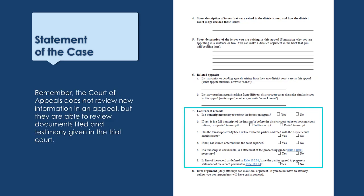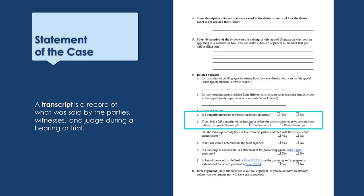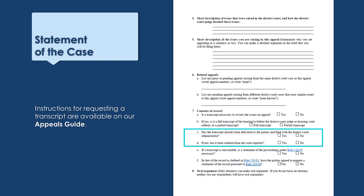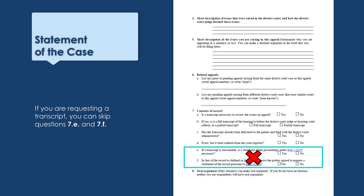Question 7 asks about the record of your case. The Court of Appeals does not review new information in an appeal, but they are able to review documents filed in the district court and testimony given at a hearing or trial. If you want the Court of Appeals to consider anything said at a hearing or trial, you will need to order a transcript. Check yes for question 7a if you are ordering a transcript, then in 7b choose whether you want a full or partial transcript. Question 7c asks if you have already filed a transcript; if not, indicate in 7d whether you have ordered it from the court reporter. If you are requesting a transcript, you can skip questions 7e and 7f.